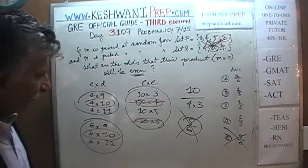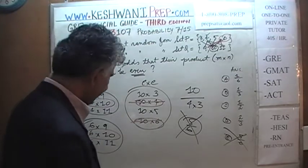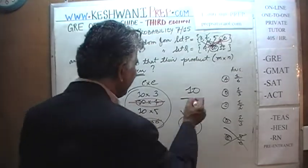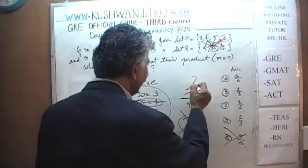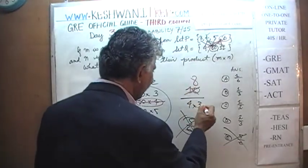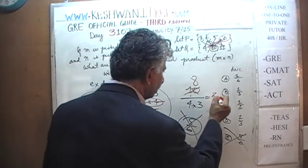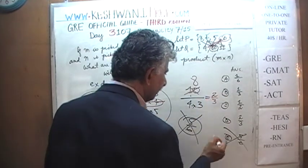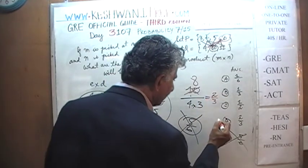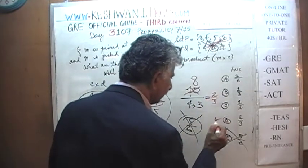So we do not have 10 possibilities — we only have 8 unique even products. 8 out of 12 boils down to 2/3. The correct answer is 2/3.